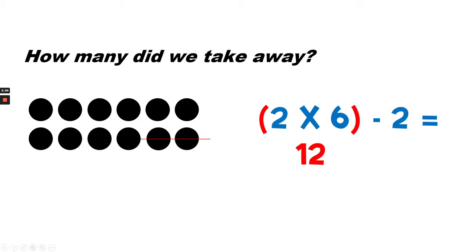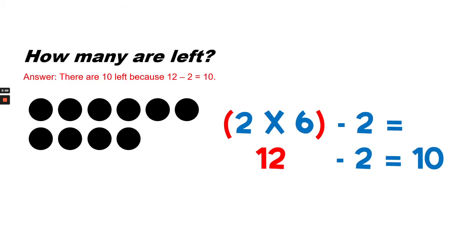How many did we take away? We took away 2. So to find the answer, we would have to subtract 2 from 12. 12 minus 2. How many are left? Answer, there are 10 left because 12 minus 2 equals 10.